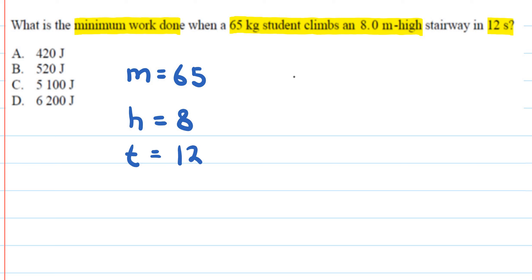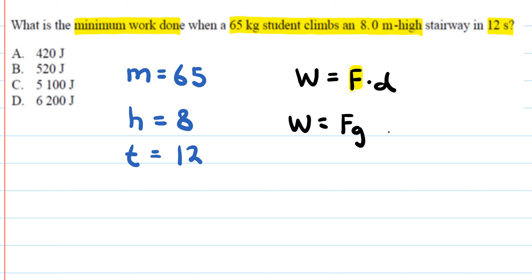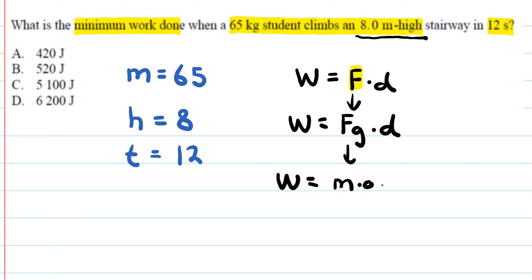We can find work using the formula W = force times distance. For this particular problem, the force is the force of gravity since the person is climbing a vertical height. So work equals the force of gravity times distance, and since the force of gravity equals mass times g, we can write W = mgh.